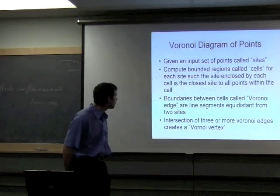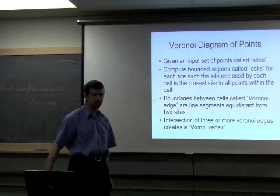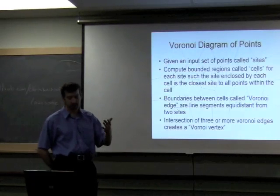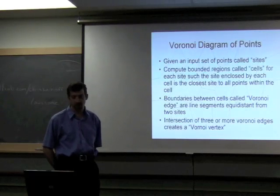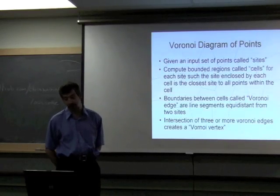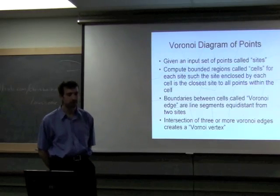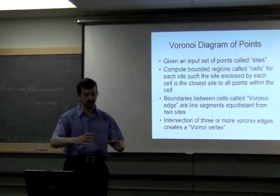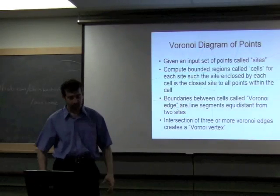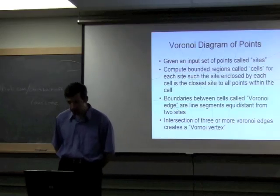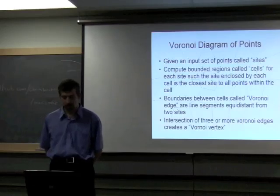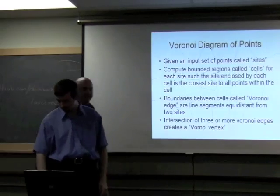The problem: Voronoi diagram of points. Given an input set of points called sites, we compute bounded regions called cells for each site such that the site enclosed by each cell is closest to all points in the cell. The boundaries between cells are Voronoi edges. The intersection between three or more Voronoi edges is a Voronoi vertex.